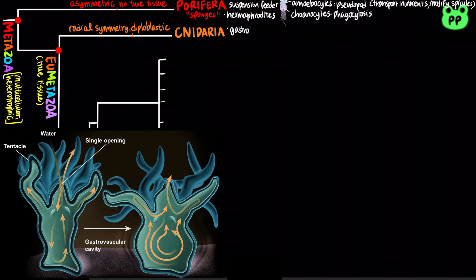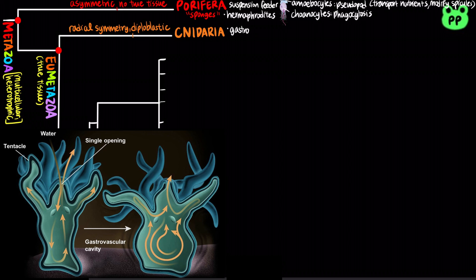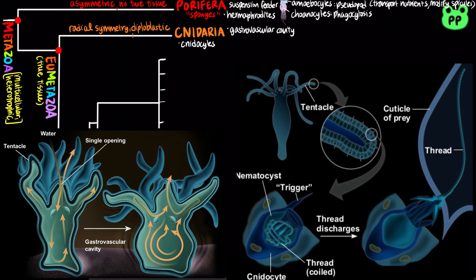Cnidarians have a central digestive compartment known as the gastrovascular cavity and a single opening that functions as both mouth and anus. Cnidarians are carnivores that use tentacles to capture prey. The tentacles are armed with cnidocytes, which contain specialized organelles called nematocysts that eject a stinging thread functioning in defense and prey capture.